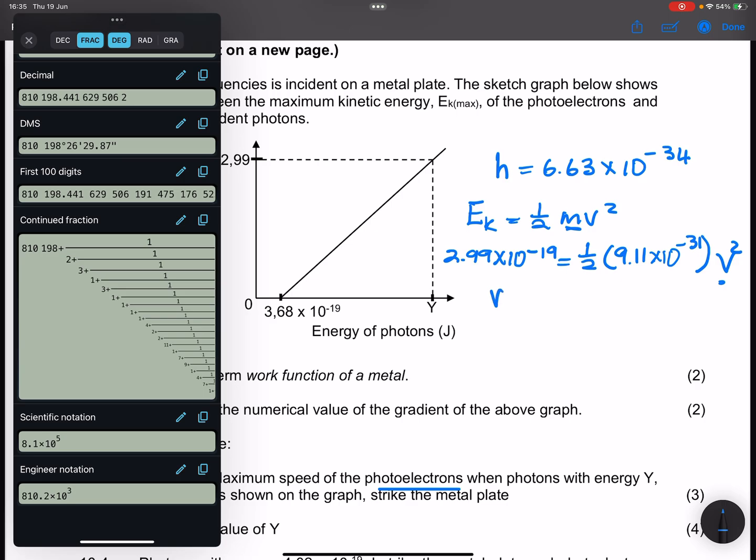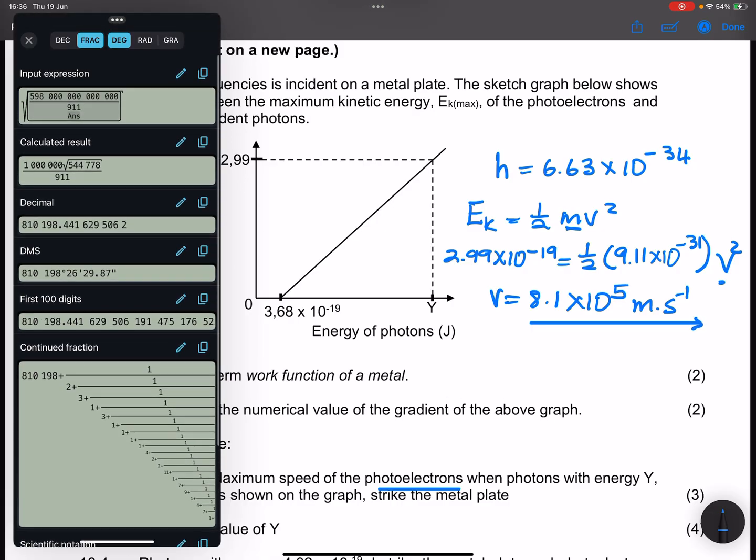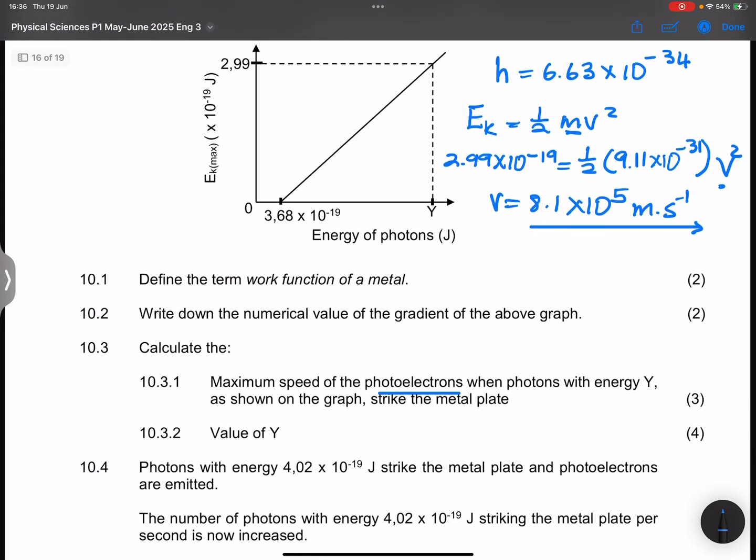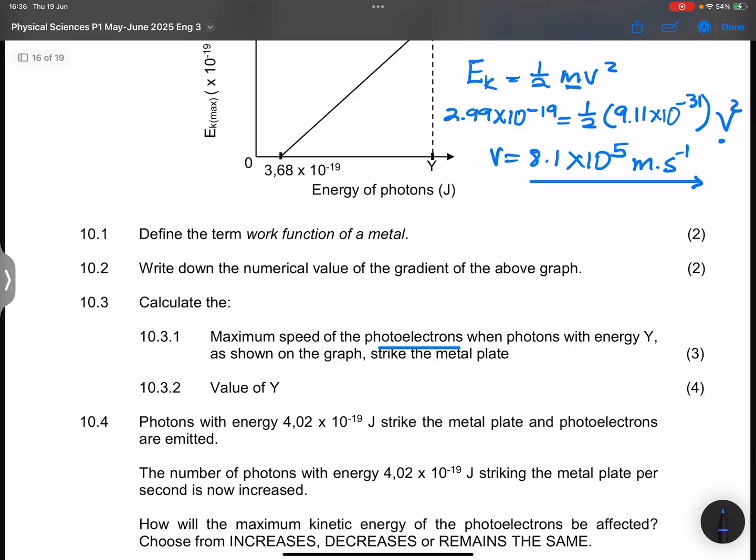So the speed is 8.1 times 10 to the power of 5, and this is meters per second. So that is the speed of the ejected electron in that case. Let's go to the next question.